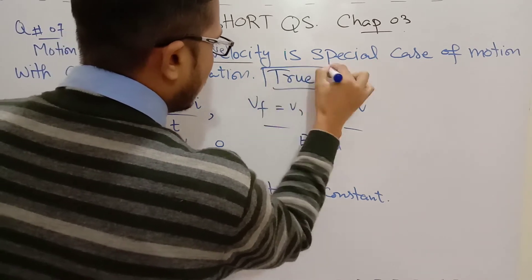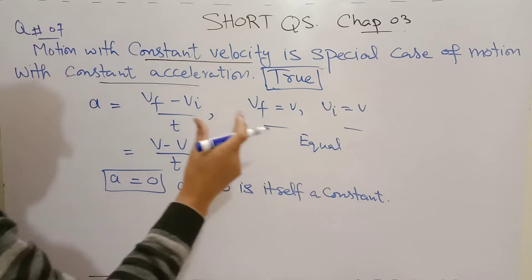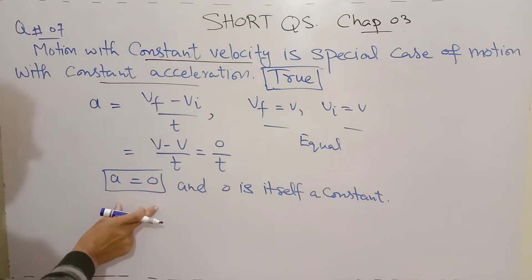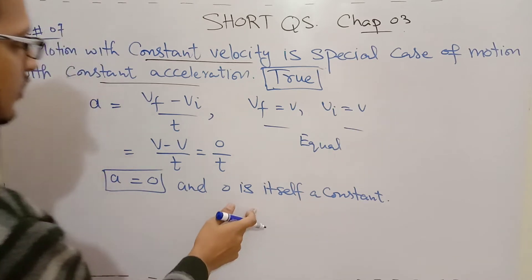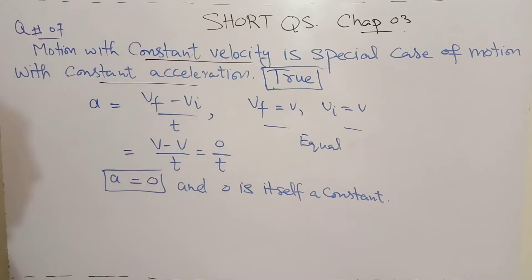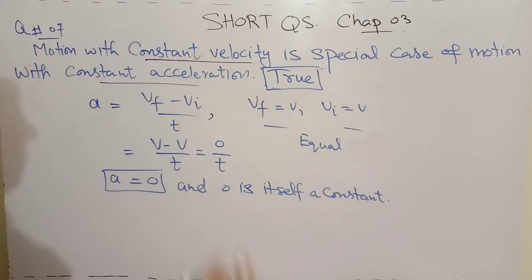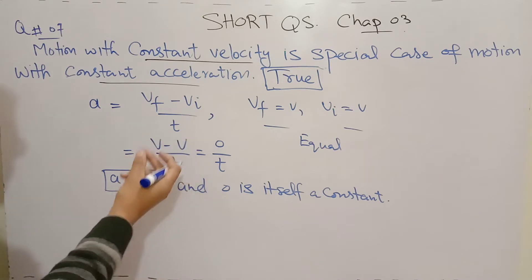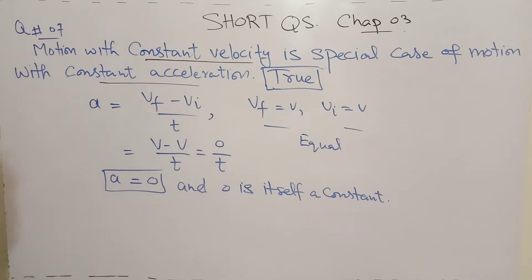This statement is true. For any case in which velocity is constant, we can prove that acceleration will be 0, and 0 is constant. So we can say that constant velocity implies constant acceleration exists, and this is the special case of motion where we consider acceleration to be 0, which is a constant value.